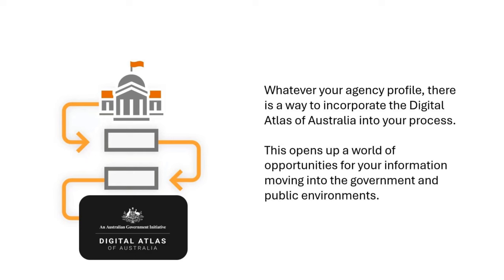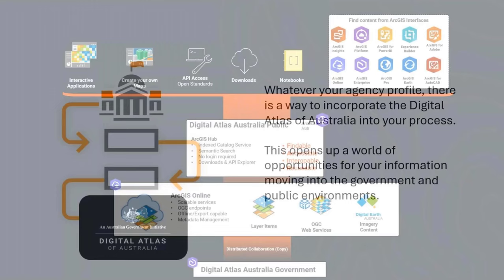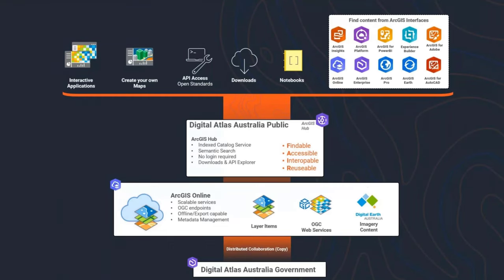Just to recap, there's a wide range of national datasets categorized into those themes Megan introduced, and different approaches or profiles that agencies can use to participate with the Digital Atlas. I'm going to shift focus to the other end of the Atlas — the different ways end users can engage with the content. It's important to note that different users will have different needs and different skill levels, and attempting to design a one-size-fits-all interface is often not the best strategy, which is why there are a variety of options to interact with content from the Atlas.